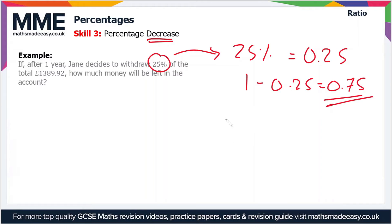Now we need to minus this from 1, so 1 minus 0.25 is 0.75. This is the value that we will be multiplying our original amount by, which in this case is £1,389.92. So let's do that now.